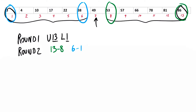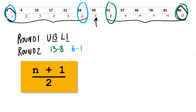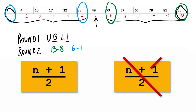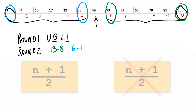Now I know what's possible in the second round, and I can figure out the median value for both halves. For the 1 through 6 half, I can use the original formula of n plus 1 divided by 2. But for the 8 through 13 half, I have to try something different. So if I always subtract the upper by the lower value and divide that by 2, I would do 13 minus 8 divided by 2, giving me 5 divided by 2, which equals 2.5.